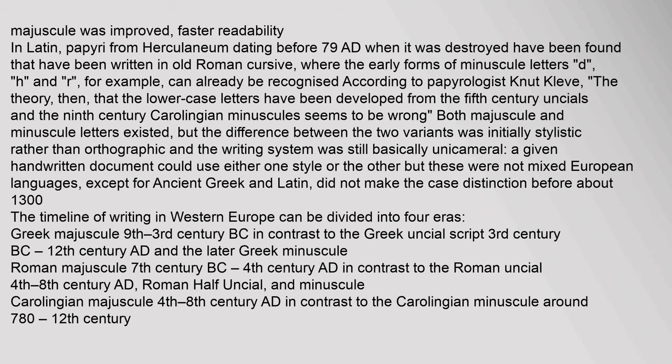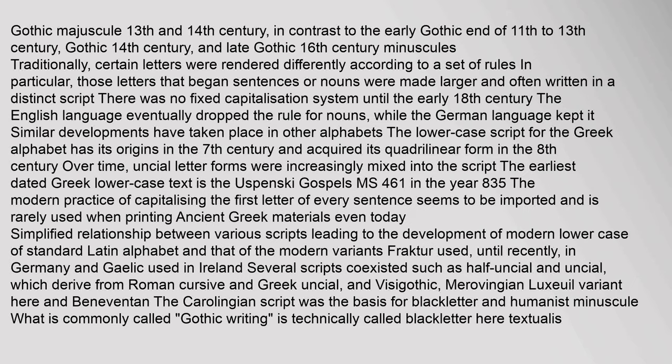Latin papyri from Herculaneum dating before 79 AD have been found written in old Roman cursive, where the early forms of minuscule letters d, h, and r can already be recognized. According to papyrologist Knut Kleve, the theory that lower case letters were developed from the 5th-century uncials and the 9th-century Carolingian minuscules seems to be wrong. Both majuscule and minuscule letters existed, but the difference between the two variants was initially stylistic rather than orthographic, and the writing system was still basically unicameral.